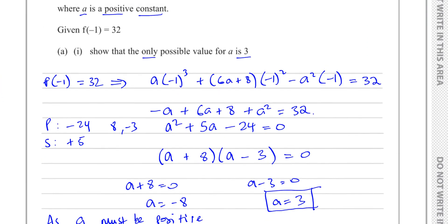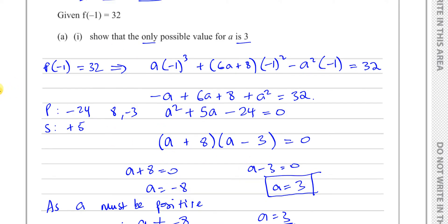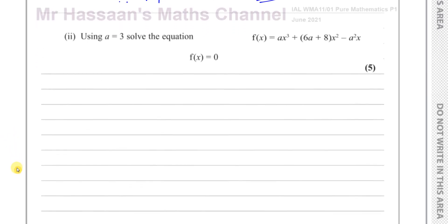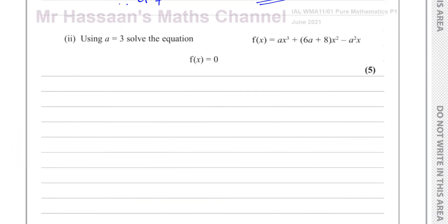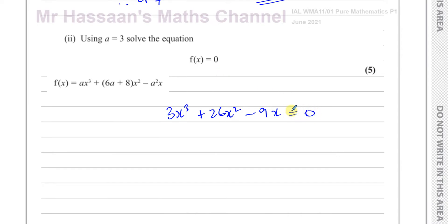What's very important here is to show that you factorized to solve it — going straight from the quadratic to the answer risks losing marks because of the statement at the top of the page. Now, part 2: using a = 3, solve the equation f(x) = 0. Replacing a with 3 gives 3x cubed plus (6×3 + 8)x squared minus 3 squared times x, which is 3x³ + 26x² − 9x = 0.